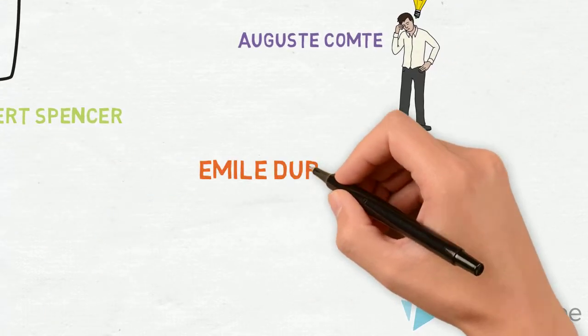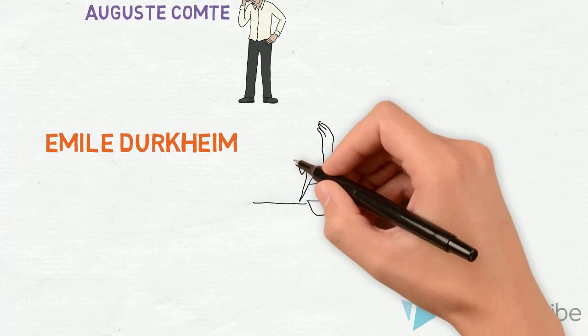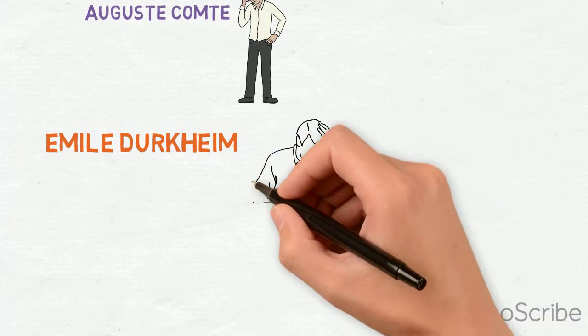Emile Durkheim conducted a study in 1897 by the name of suicide. This study was one of the very first in the field of sociology.